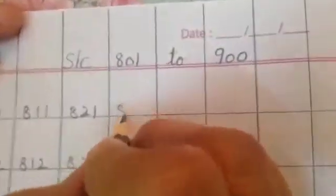What comes after 830? 831, 832, 833, 834, 835, 836, 837, 838, 839. What comes after 839?